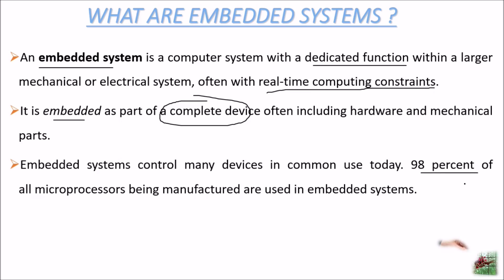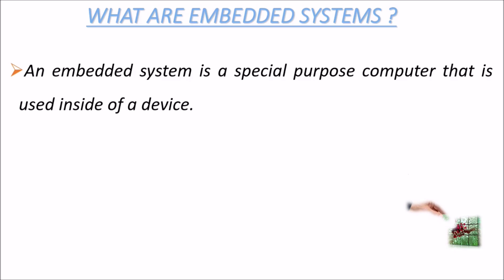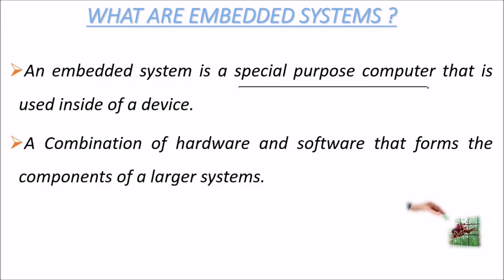Ninety-eight percent of all microprocessors being manufactured are used in embedded systems. An embedded system is again a special-purpose computer that is used inside of a device — or a combination of hardware and software that forms a component of a larger system.